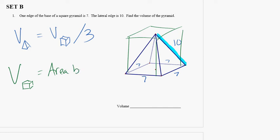Now here we can quickly find the area of the base. The area of the base is the area of this square. It's just 7 by 7. So the area of the base is 49.